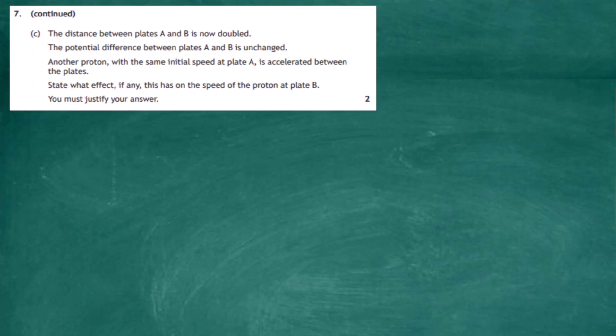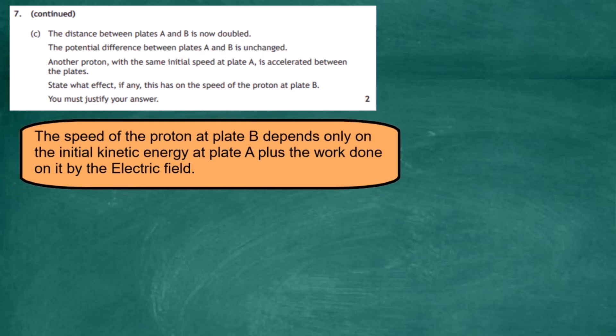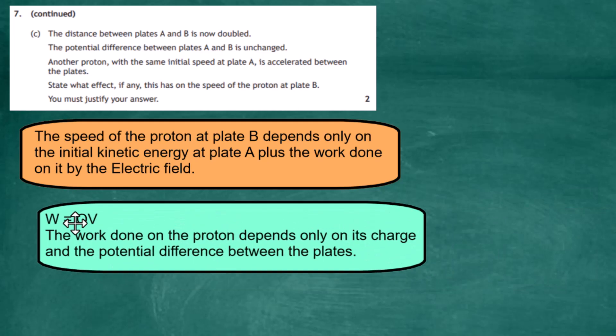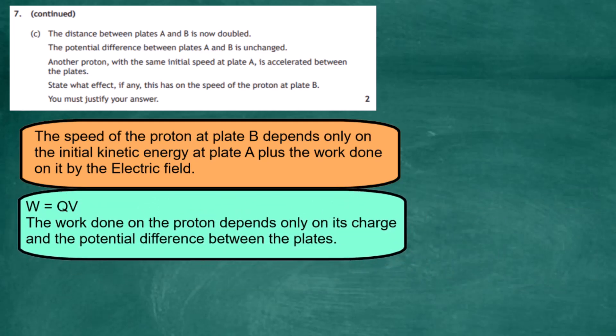Question 7, part c. The distance between plates A and B is now doubled; the potential difference is unchanged, and another proton with the same initial speed at plate A is accelerated between the plates. State what effect, if any, this has on the speed of the proton at plate B and justify your answer for two marks. The speed at plate B depends only on the initial kinetic energy at plate A plus the work done on it by the electric field. The work done equation for a charged particle is W = qV.